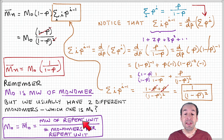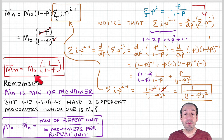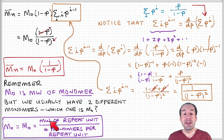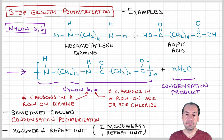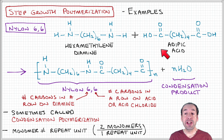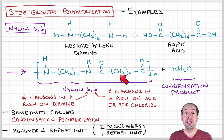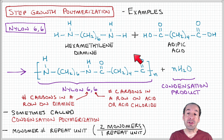The monomer molecular weight M₀ used in these calculations is essentially an average — specifically the repeat unit molecular weight divided by the number of monomers per repeat unit. For nylon, for example, an amine reacts with an acid or acid chloride; these two different monomers combine to form one repeat unit. So to calculate M₀ for our number average molecular weight calculations, we take the repeat unit molecular weight and divide by two, since there are two monomers per repeat unit.